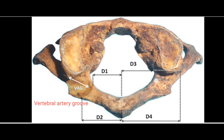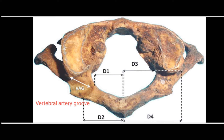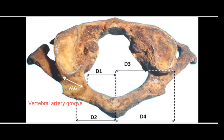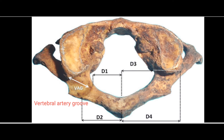Behind the articular surface, we have the groove for the vertebral artery. This is the articular facet of the dens, where the dens of the second vertebra will be connected. The occipital condyles will be connected here — forming a pivot joint with the second vertebra, and a condylar joint with the skull. The vertebral artery groove is present over this part. This is the transverse foramen, and from the transverse foramen, the artery will come here and then go up to the cranium.